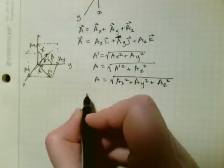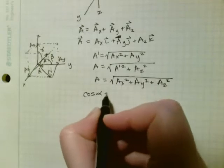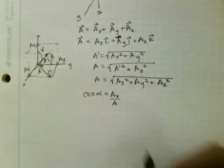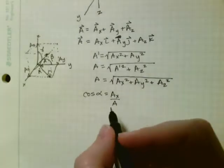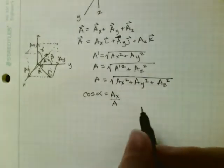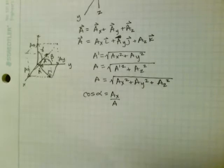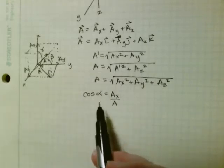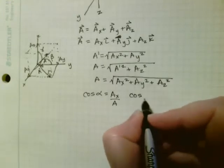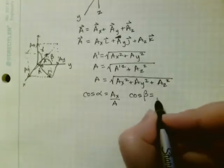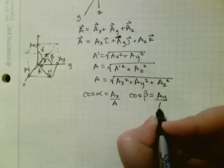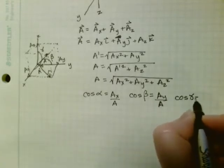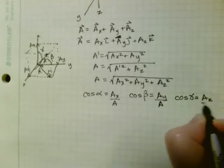So that gives us that cosine of alpha is equal to ax over alpha. Sorry, that's ax over a. I have to use the phonetic alphabet in my job, and so sometimes I call capital letter a alpha. But this is alpha. So cosine of beta is equal to ay over a. And cosine of gamma is equal to az over a.